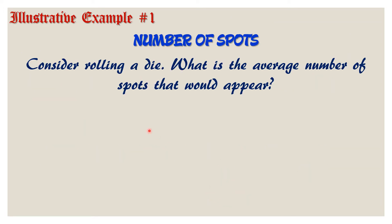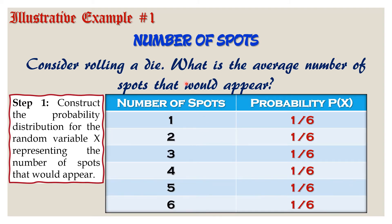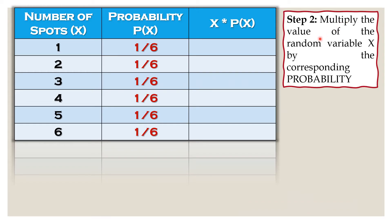We have here illustrative example number one about the number of spots. Consider rolling a die — what is the average number of spots that would appear? For step number one, we construct the probability distribution. Here is the probability distribution: on the first column we have the values of the random variable x, and the probability on the second column. For step number two, we multiply the value of the random variable x to its corresponding probability. One times one over six, that is one over six.